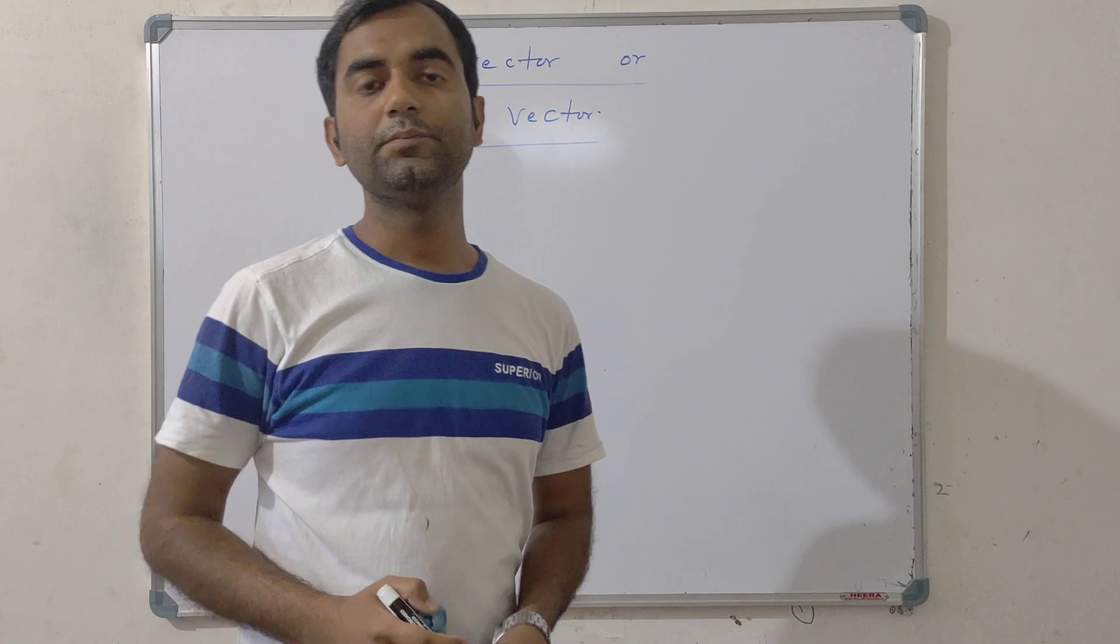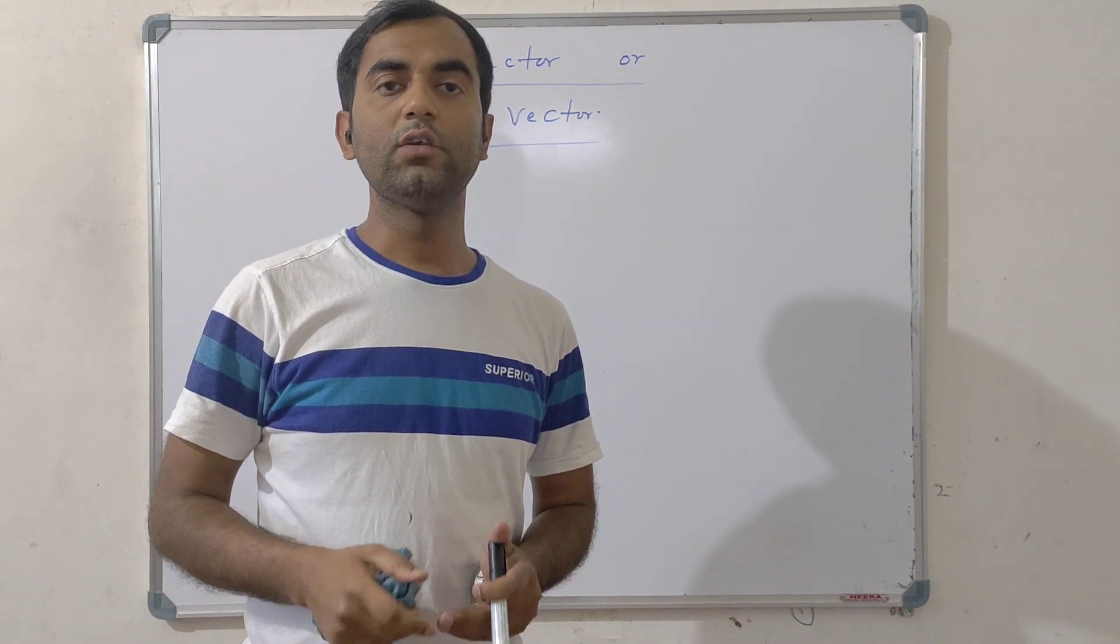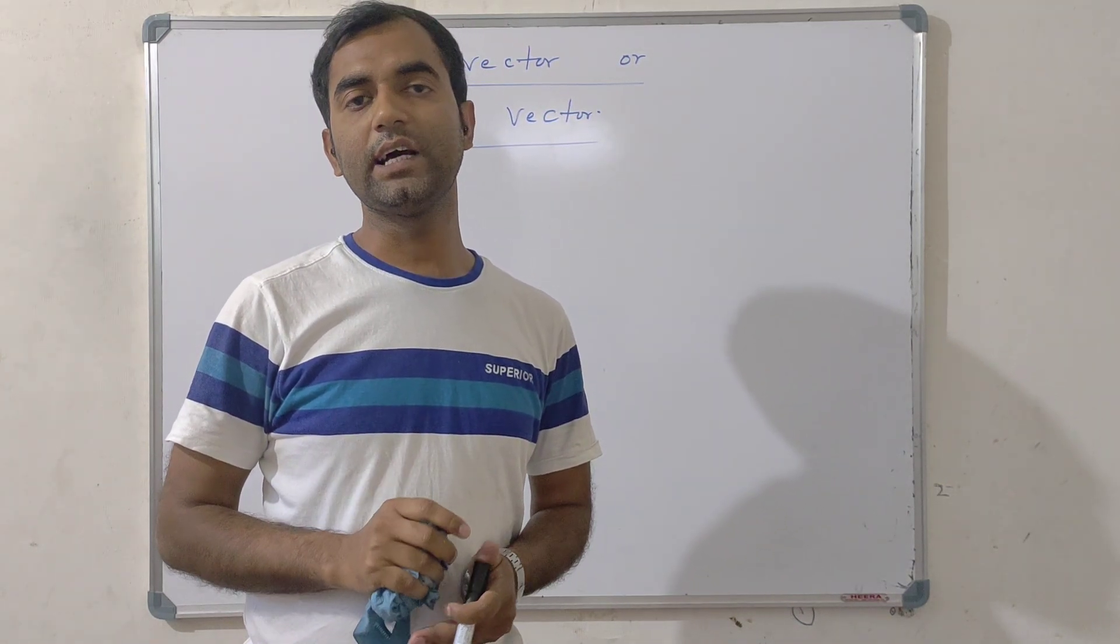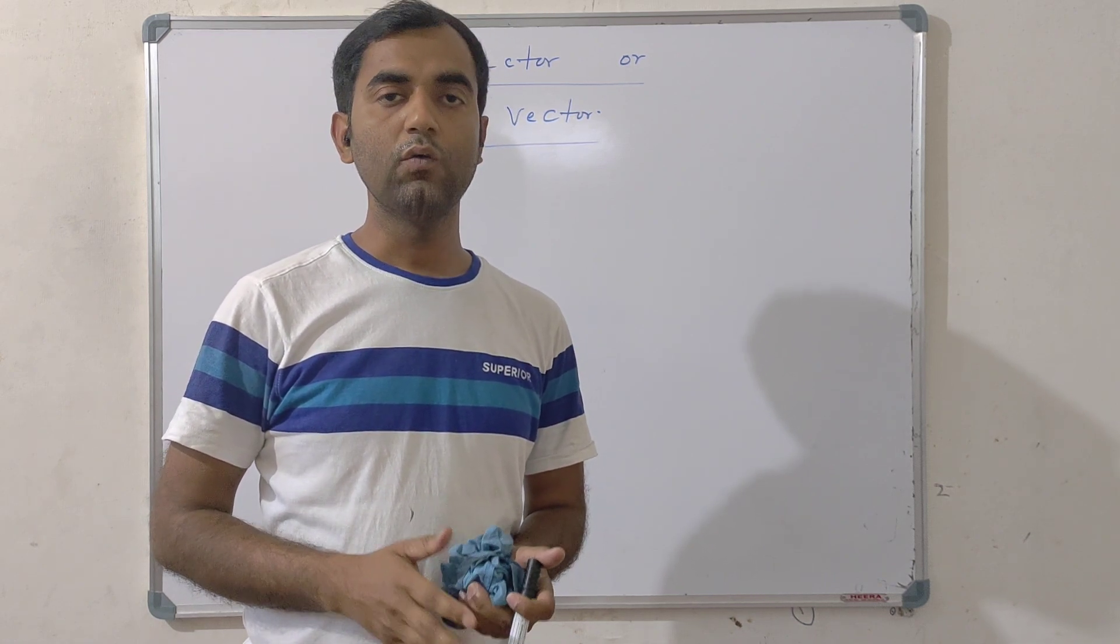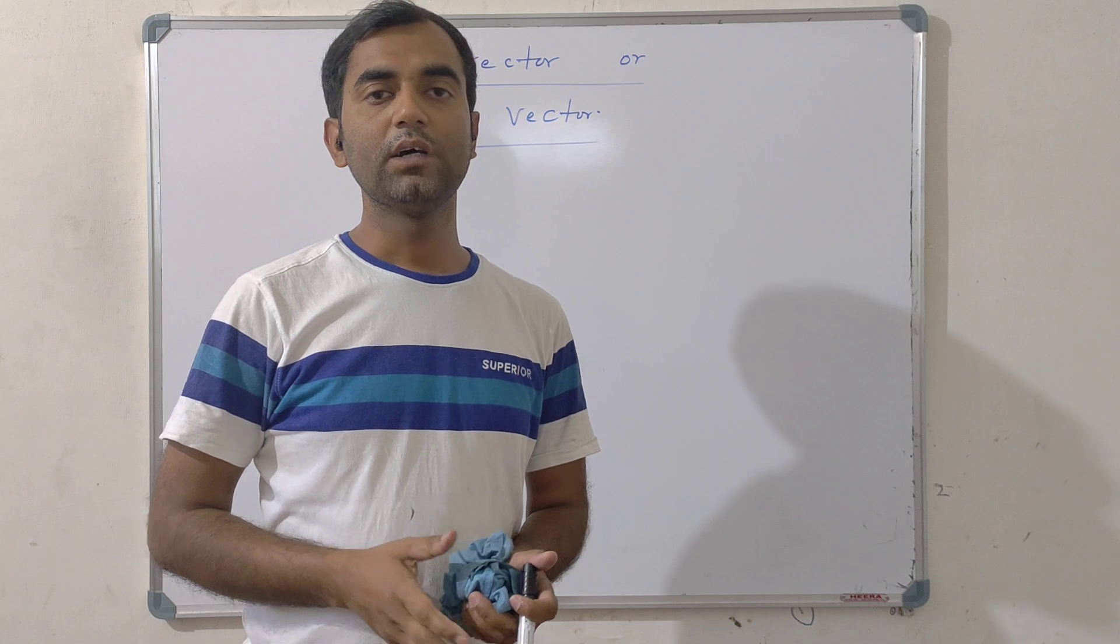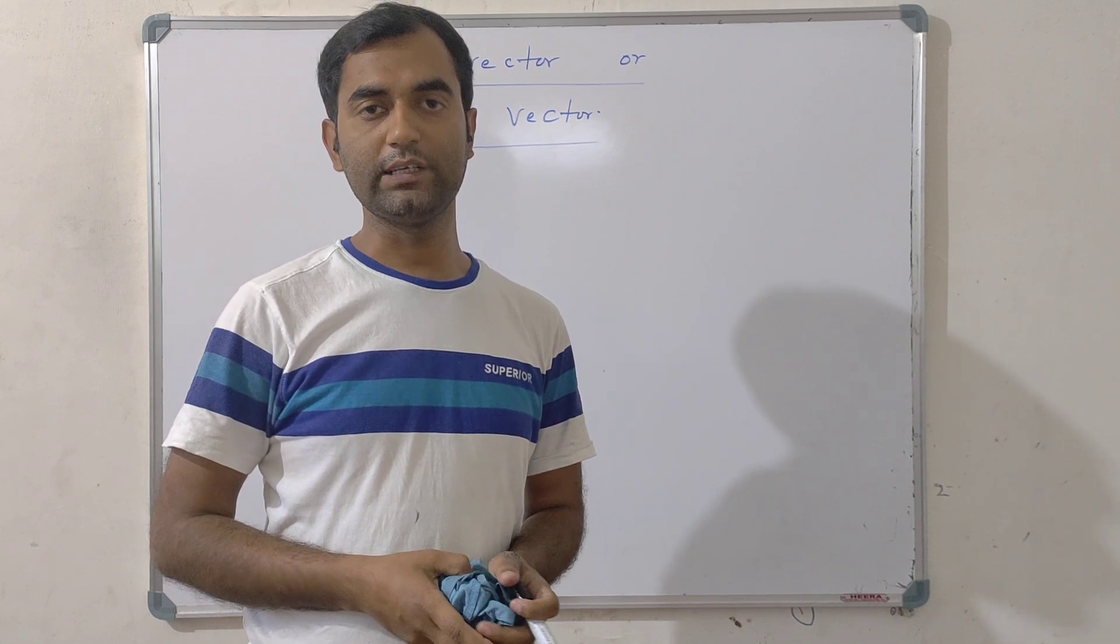A vector with zero magnitude and with no certain or definite direction is known as zero vector. We have to consider some examples to have a basic knowledge of zero vector or null vector.